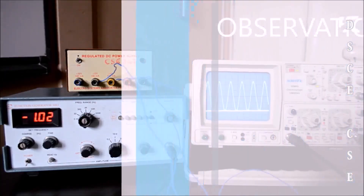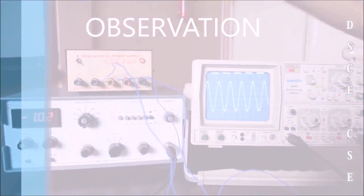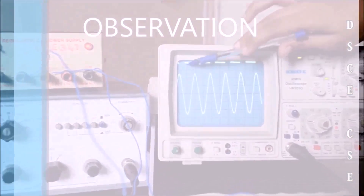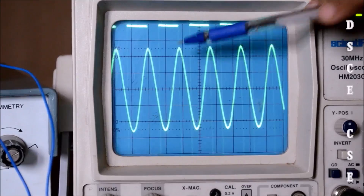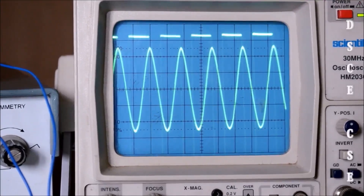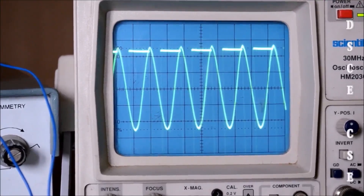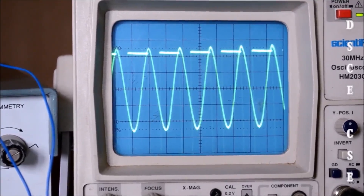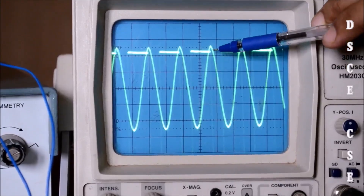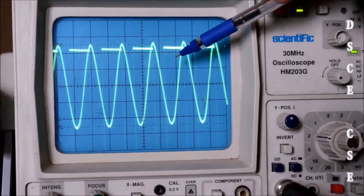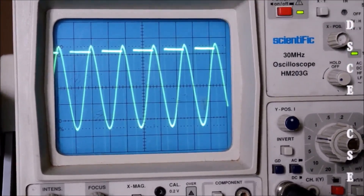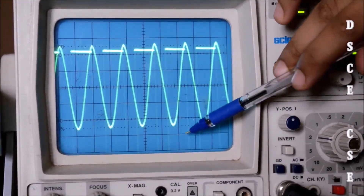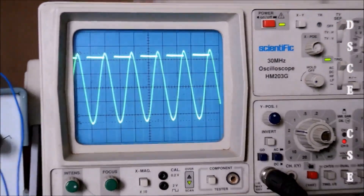Now let us see the output. A square waveform is generated. The square waveform is cutting the sine wave at a certain point, which lies at around 2.1 divisions. So 2.1 into 2 volts gives us 4.2 volts, which is approximately the given UTP value of 4 volts. Similarly, we can calculate the LTP value by moving the Y position.